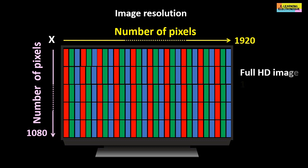Example in a full HD image, there are 1920 pixels per line on the width and there are 1080 lines on the height, which makes a total of 2,073,600 pixels.